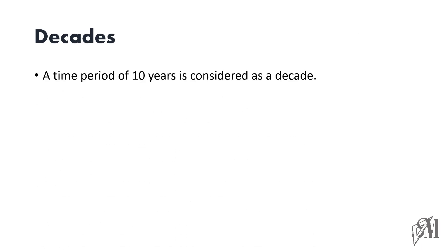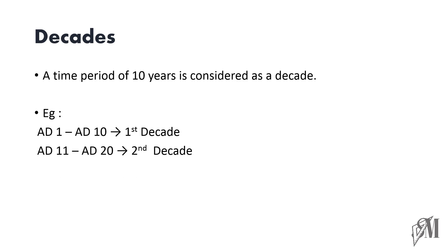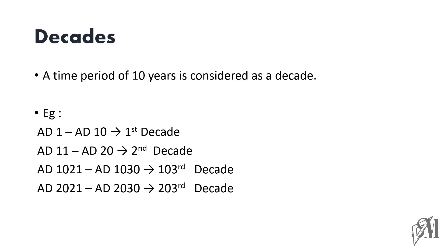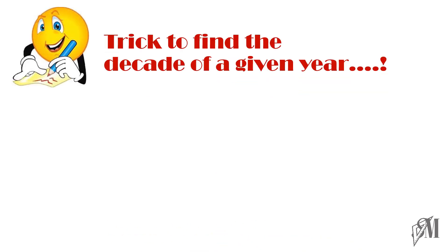What is a decade? A time period of 10 years is considered as a decade. From AD 1 to AD 10 is the first decade, AD 11 to AD 20 is the second decade, AD 1021 to 1030 is the 103rd decade. For example, 2021 to 2030 belongs to the 203rd decade — so we are currently in the 203rd decade.